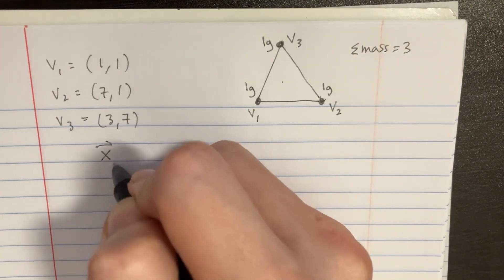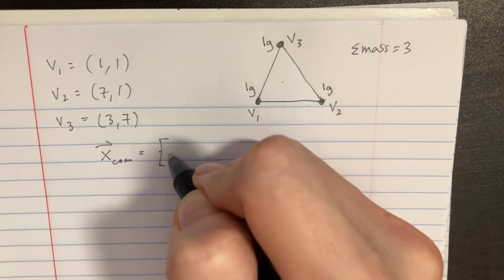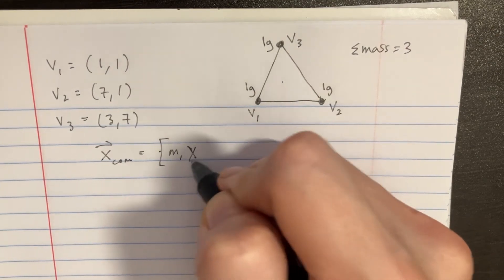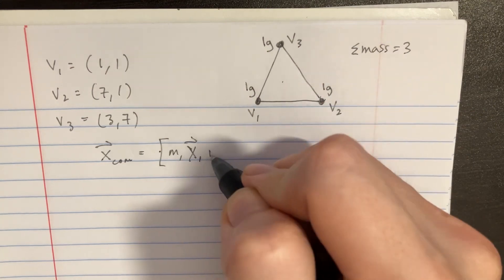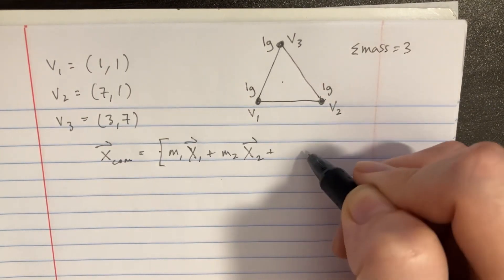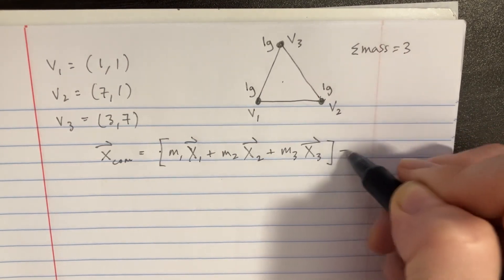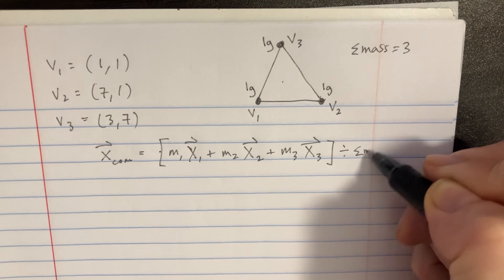Let's remember what that would look like. So x_com equals, we need m1 times the x1 vector here, plus m2 and the x2 vector here. And then we get another mass, a third vector here. We have to divide this whole thing by the total mass at the end.